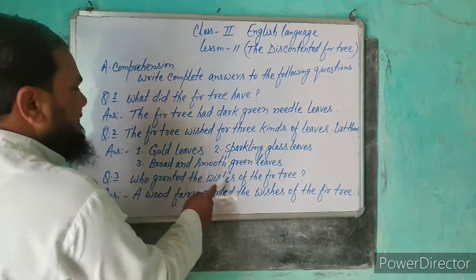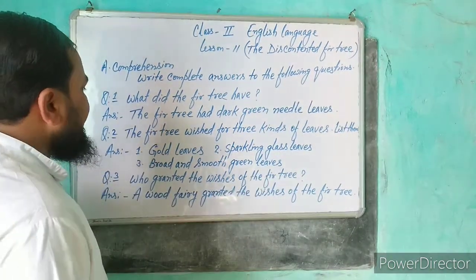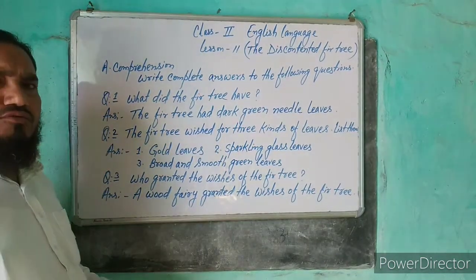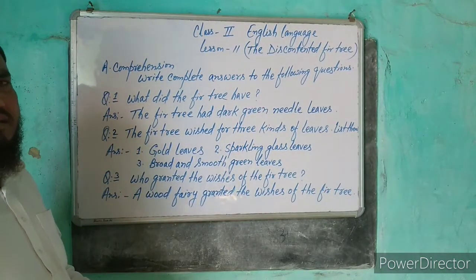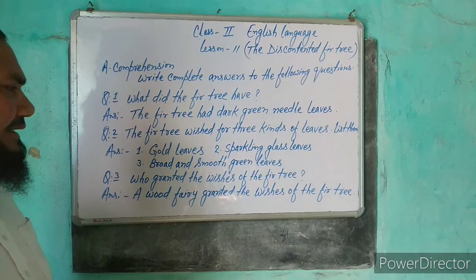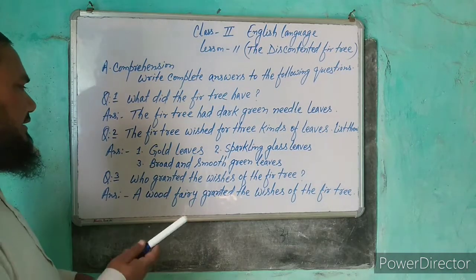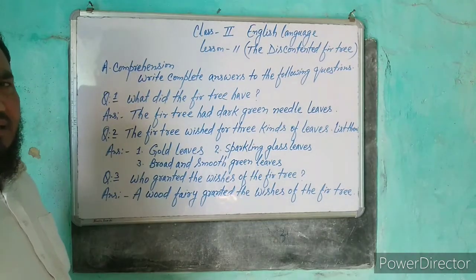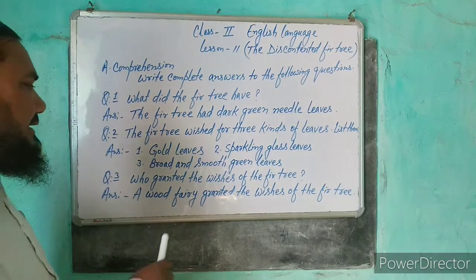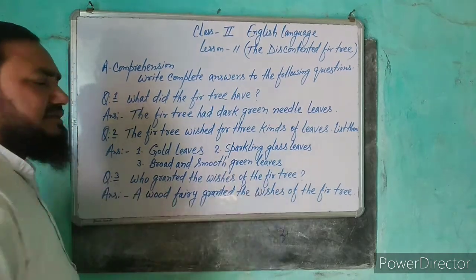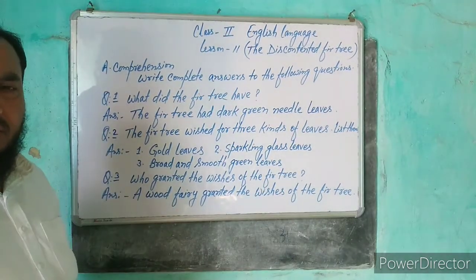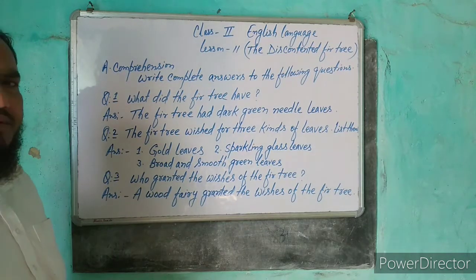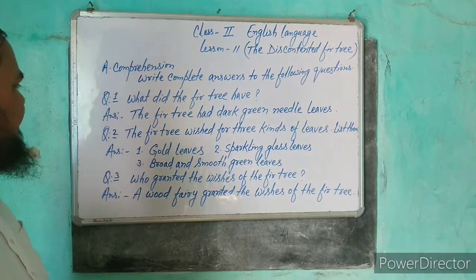Question number 3: Who granted the wishes of the fir tree? फर्ट्री की इच्छा को किसने पूरा किया? Answer: A wood fairy — जंगल की एक परी — granted the wishes of the fir tree। उसने fir tree की wishes को पूरा किया।